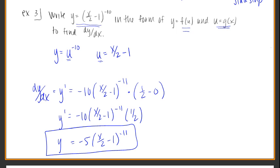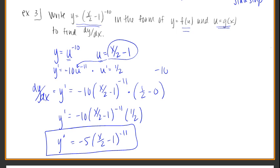As you're seeing with these functions, you're basically taking the derivative of u to the negative 10, which gives negative 10u to the negative 11, and then u prime is 1/2. Once you plug u back into the base and multiply those two things together — negative 10u to the negative 11th times 1/2 — you get the same thing. It's just whichever way you see it better.